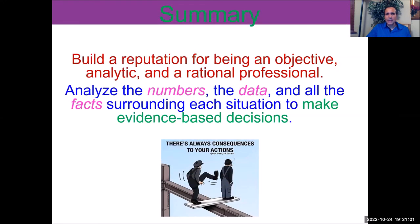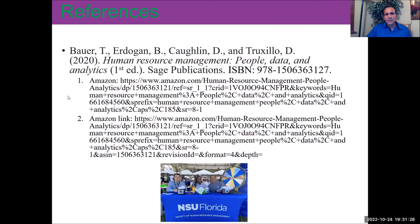In summary, build a reputation for being an objective, analytic, and rational professional at all times. Do this by analyzing the numbers, data, and all facts surrounding a situation to make evidence-based decisions, thereby avoiding any disparate impact on any group of candidates in your workplace. For more information, look at Chapters 4 and related chapters in your textbook that cover diversity, equity, and inclusion, adverse impact, adverse treatment, and EEO laws.